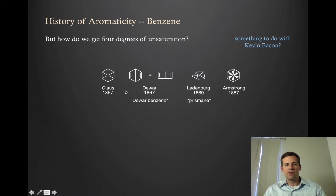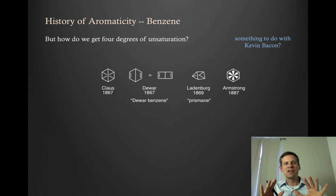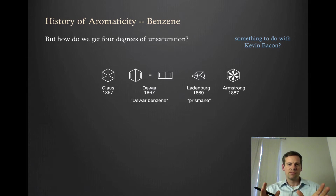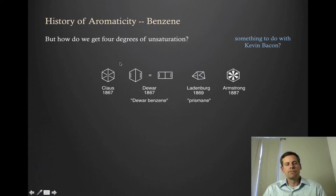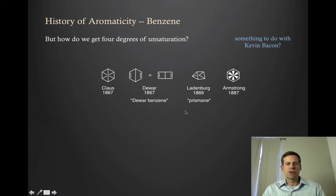I just show some of the structures that were proposed for benzene. A lot of these look very silly to the modern eye, but keep in mind this is before people even knew that atoms were real, and they certainly didn't know the structure of atoms, let alone the nature of bonding. So actually these guesses aren't so terrible, but you can see that some of these structures make a good attempt at how you can get four degrees of unsaturation with only six carbons. But of course, none of these were actually correct.